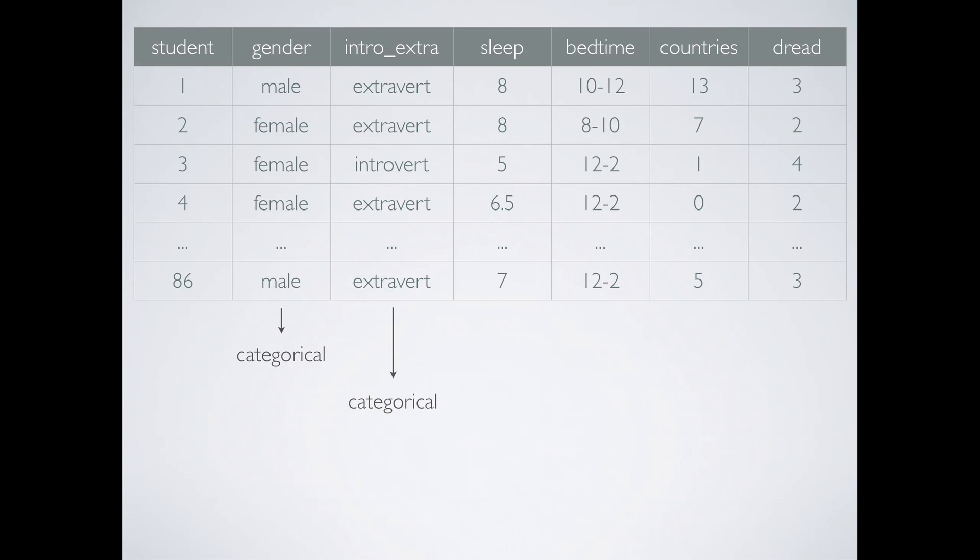The third variable measures the amount of sleep students get. It is a numerical and continuous variable. Note that many students rounded their answers, but time is indeed a continuous variable. Bedtime is a categorical and ordinal variable, since the levels have an inherent ordering to them.